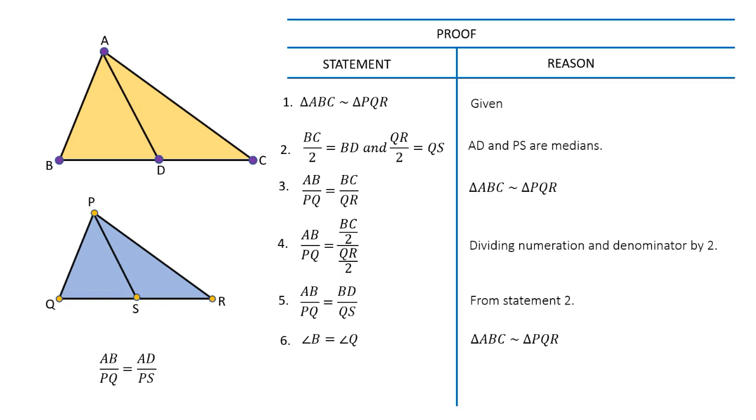Also, since triangle ABC is similar to triangle PQR, this implies angle B is equal to angle Q. It follows from statements 5 and 6 that in triangles ABD and PQS, two corresponding sides have the same ratio and the measure of angles between them are equal.